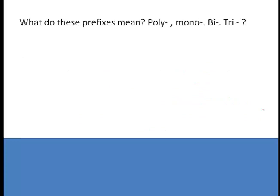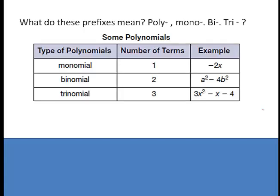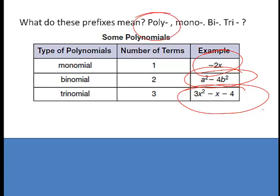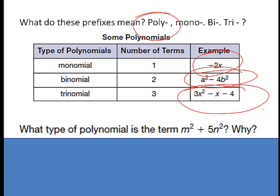What does poly mean? What does mono mean? Poly means many. A monomial is 1 term. A binomial is 2 terms. A trinomial is 3 terms. So if you've got a monomial, you've got just one term; a binomial, two terms; a trinomial, three terms. For example, the term M² plus 5N² would be a binomial because it has two terms: M squared and 5N squared.